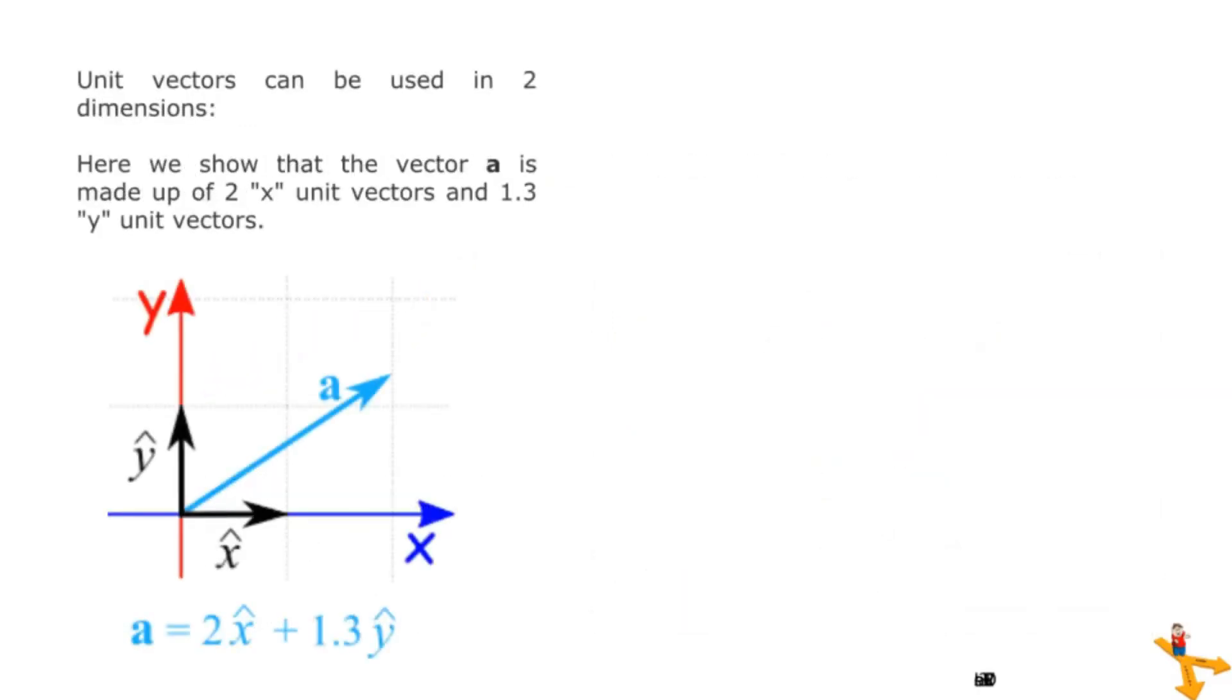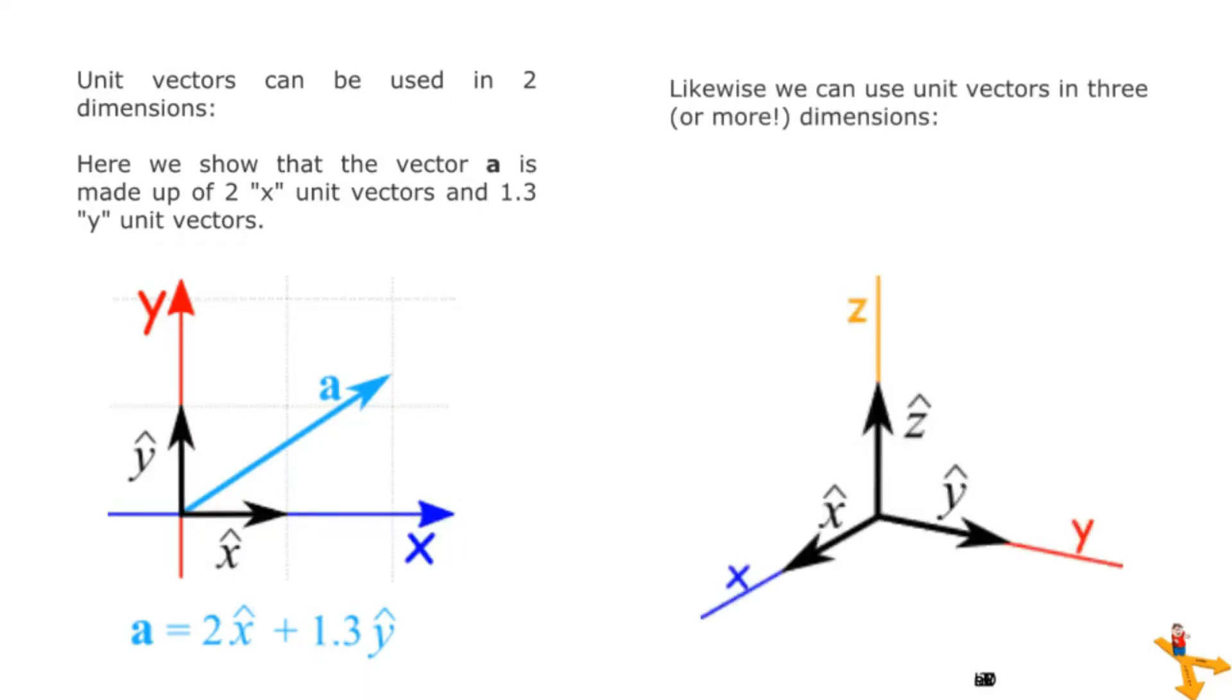Unit vectors can be used in two dimensions. Here we show that the vector A is made up of 2 x unit vectors and 1.3 y unit vectors. Likewise, we can use unit vectors in 3 or more dimensions.